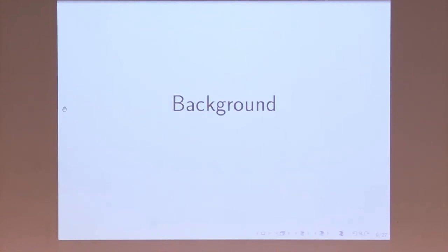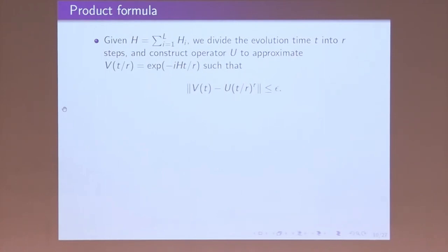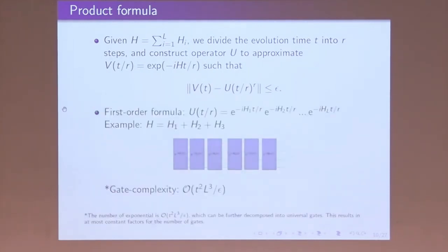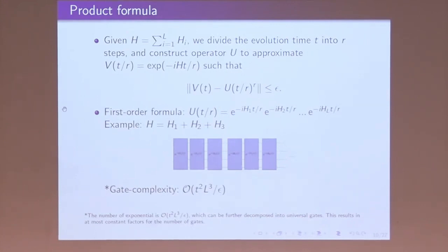I want to give a quick introduction of the product formula and how we use the randomized scheme to improve it. We need to construct the unitary operator to approximate the evolution operator. The first-order formula is quite simple: if there are three terms in the Hamiltonian, we directly implement them, and if there are R steps, we implement the step R times. The gate complexity is at the order of T² L³ / ε. Here, we are evaluating the number of exponentials; since different devices use different universal gates, there will be a small constant factor, but the gate complexity will be on the order of T² L³ / ε.